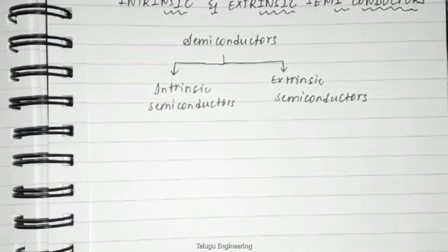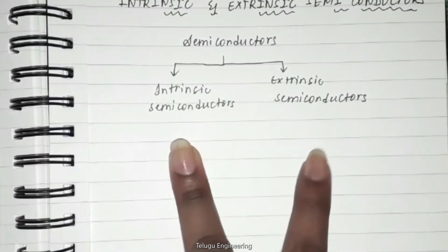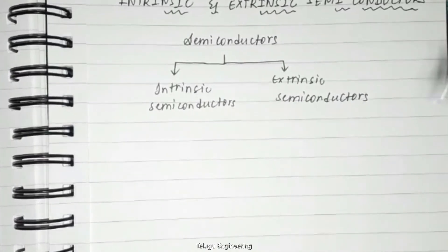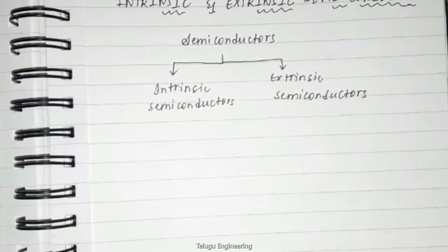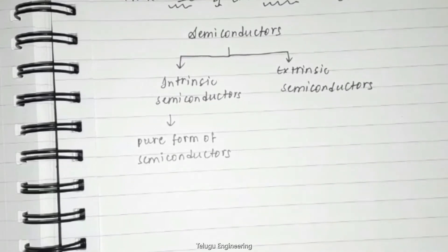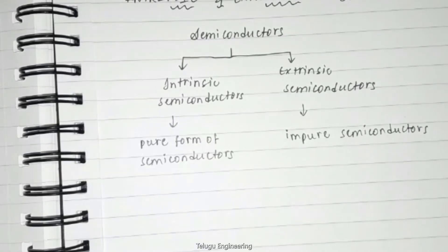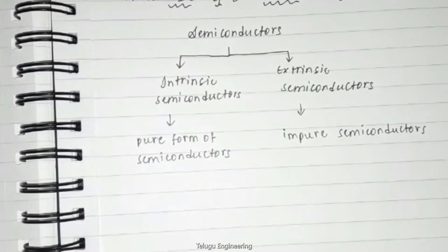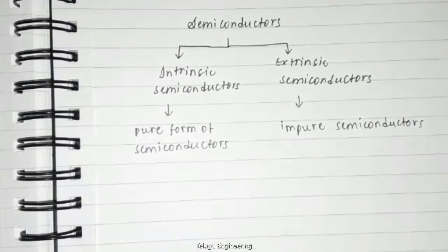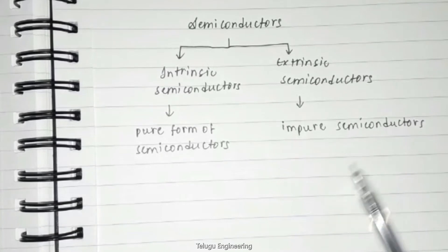In this video we are going to discuss intrinsic and extrinsic semiconductors. Semiconductors are classified into two types: intrinsic semiconductors, which are the pure form of semiconductors, and extrinsic semiconductors, which are semiconductors in which impurities are intentionally added to make them conductive. The conductivity of an intrinsic semiconductor is essentially zero at room temperature, whereas the extrinsic semiconductor is very conductive at room temperature.